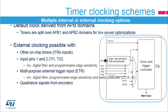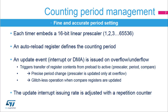Lastly, the quadrature signals from an encoder can be processed to provide a clock and a counting direction, as described later in this presentation. This slide explains how to adjust the timer counting period. Each timer embeds a linear clock pre-scaler, which allows you to divide the clock by any integer between 1 and 65,536. This allows the counting pace to be precisely adjusted.